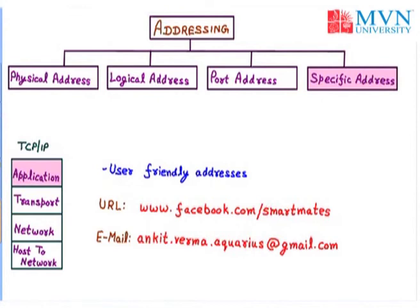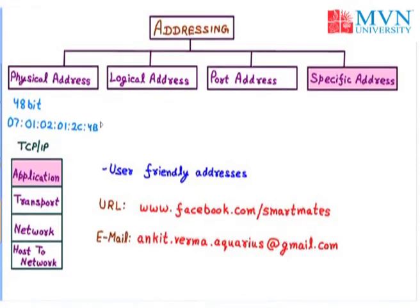So we have discussed the addressing scheme with four different addresses. First, the physical address, imprinted on the network interface card, is 48 bits (6 bytes), represented by 12 hexadecimal digits — for example, 07:01:02:01:2C:4B. Next, the logical address is 32 bits. Then the port address is 16 bits — for example, a numeric value like 753. And the specific address may be any URL or email ID. That is all about the addressing scheme. Thank you.